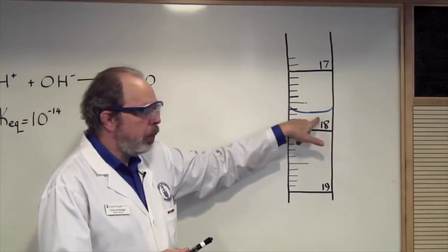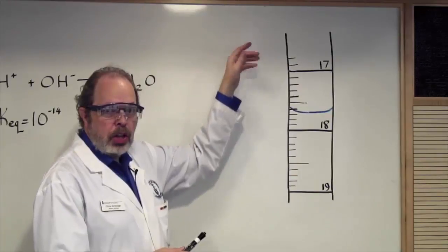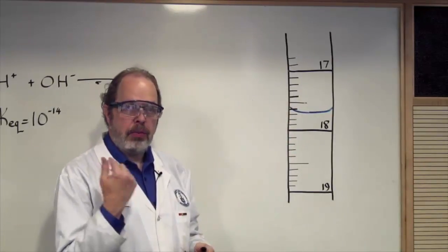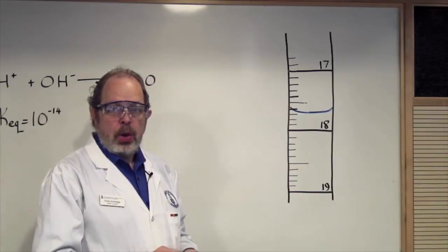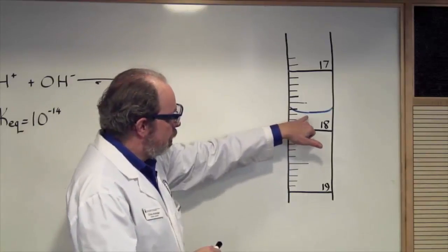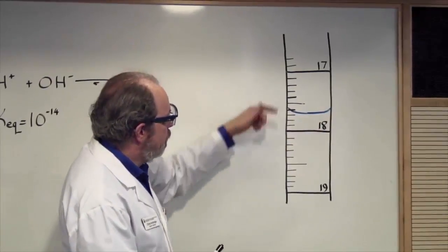So in this case, if this is the liquid in the burette, you should put your eye here. You shouldn't have it down here or up on top. You want to look and see that the ring is, in fact, a straight line to your eye. You are aiming to read the bottom of the meniscus here.